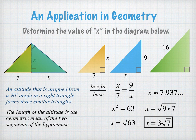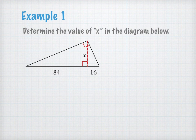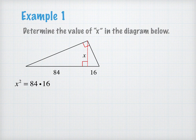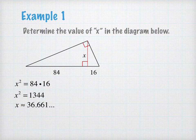The length of the altitude is the geometric mean of the two segments of the hypotenuse. We're going to apply this in the next example. We have another right triangle with different dimensions and another altitude, and we can use what we just discovered — that x squared equals 84 times 16. I can multiply these together with a calculator and then take the square root of 1344. It is not a perfect square, so I need to simplify the radical.